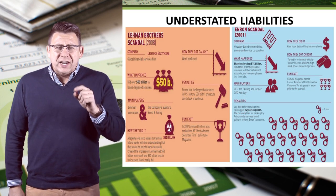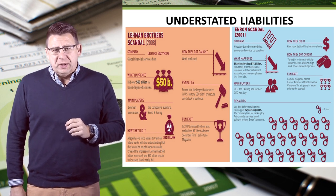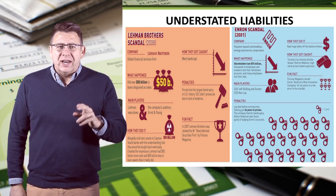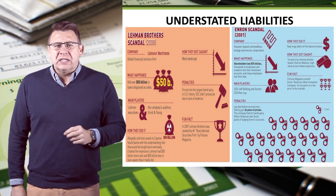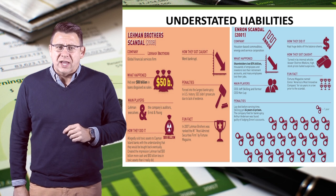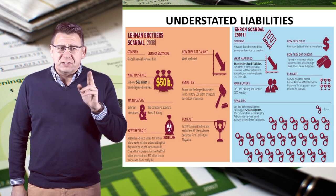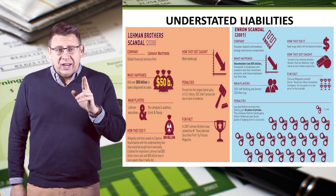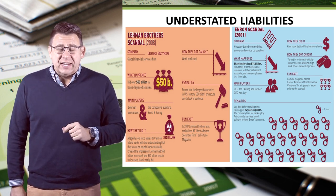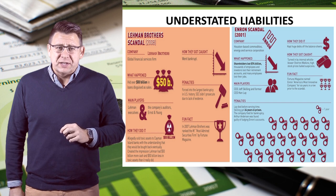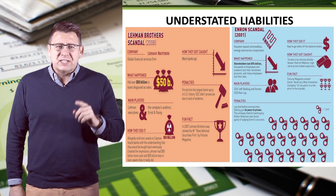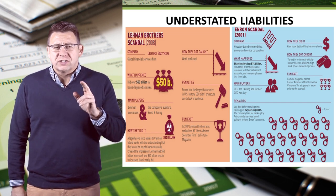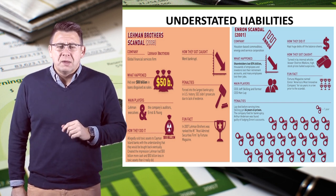Overstating revenues isn't the only way to commit accounting fraud. Enron hid billions of dollars of liabilities off its balance sheet, thereby understating debts and related expenses. Its bankruptcy cost shareholders over $74 billion.